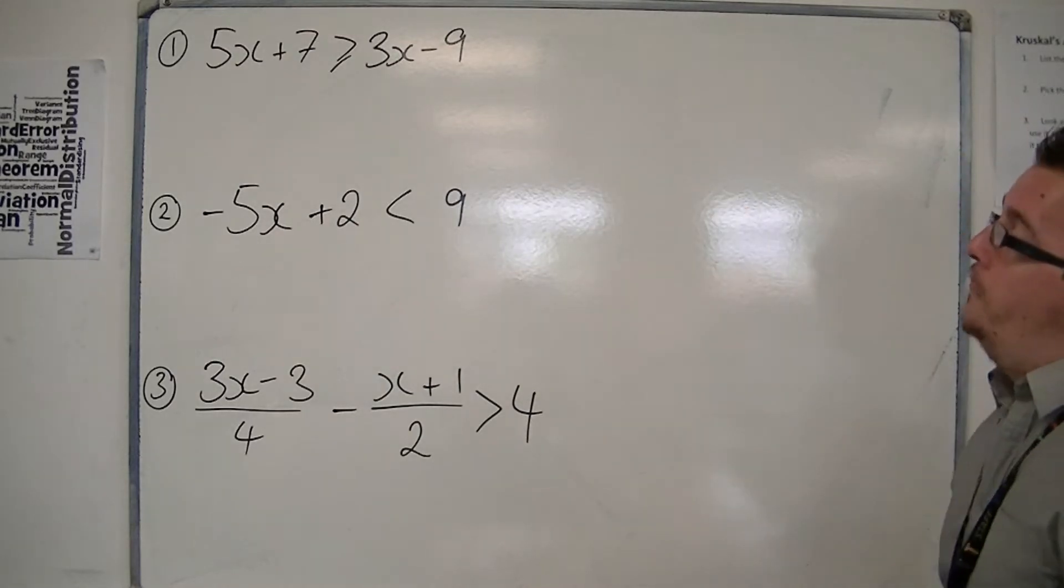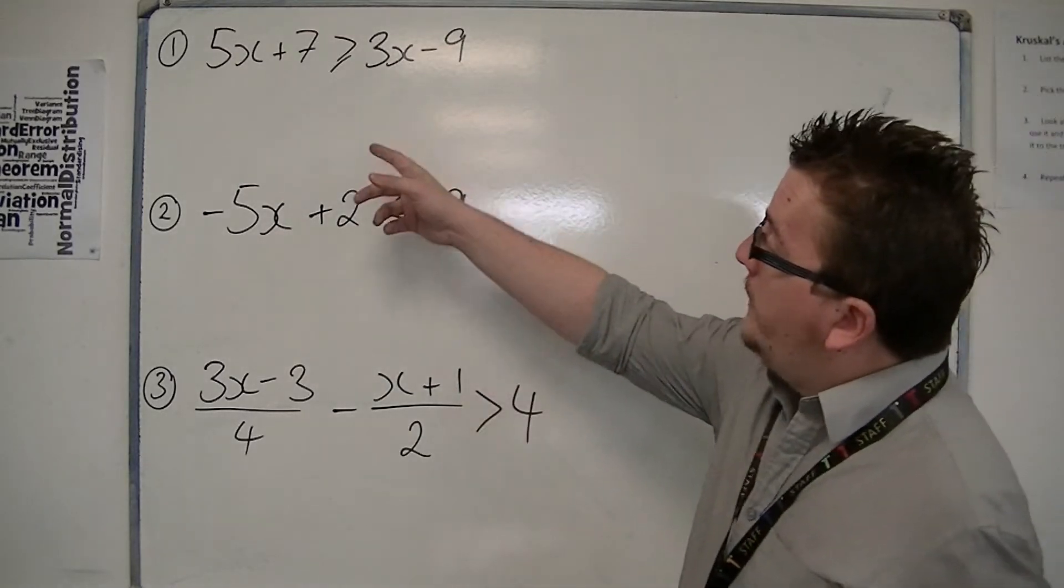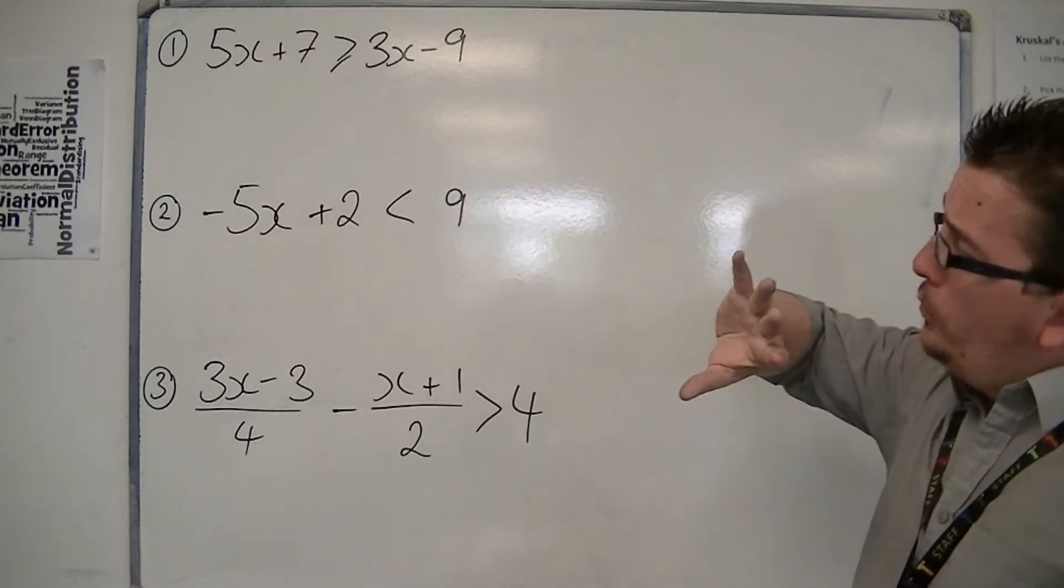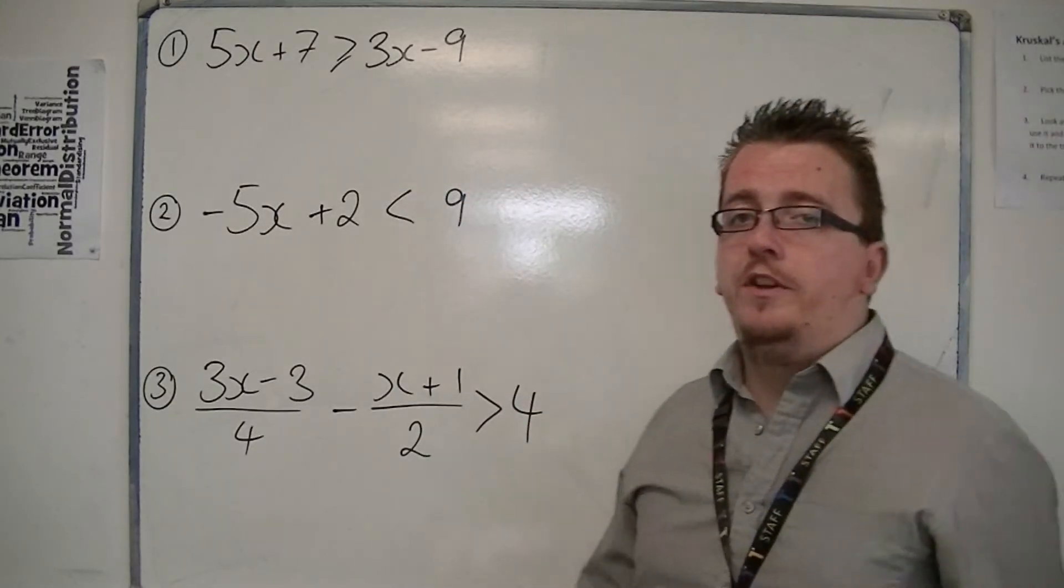Starting with the first one: 5x plus 7 is greater than or equal to 3x minus 9. We treat it much the same way as we would an equation.